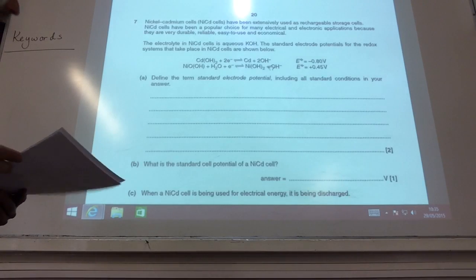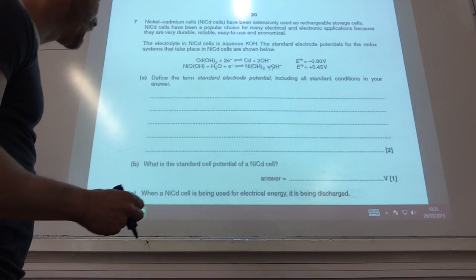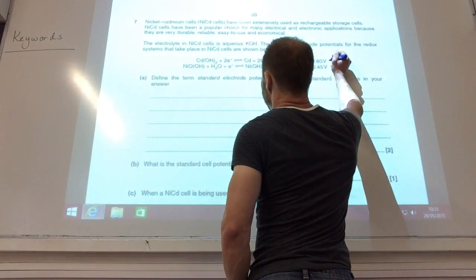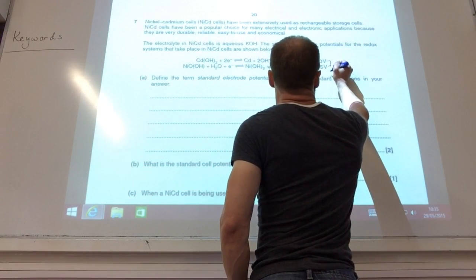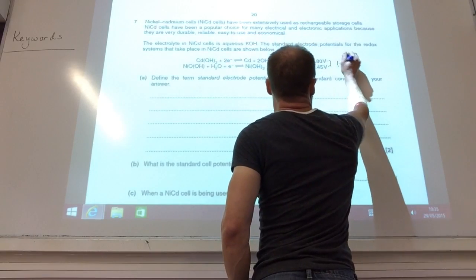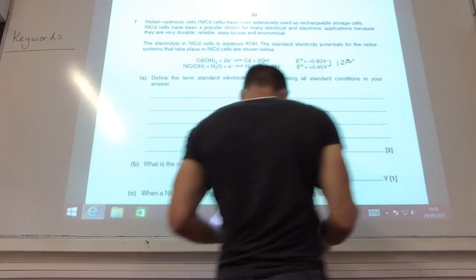What is the standard potential of this nickel-cadmium cell? It's going to be the difference between those two there, and the difference between those is going to be 1.25 volts.